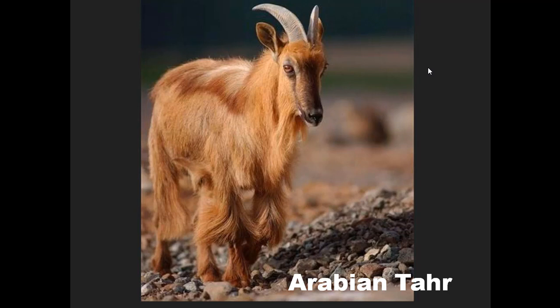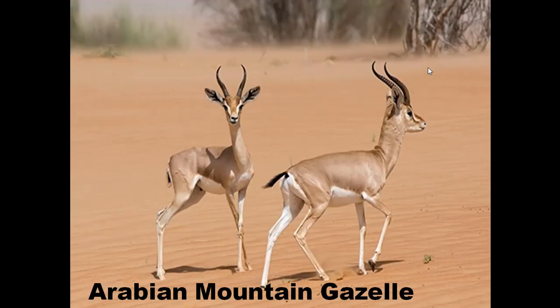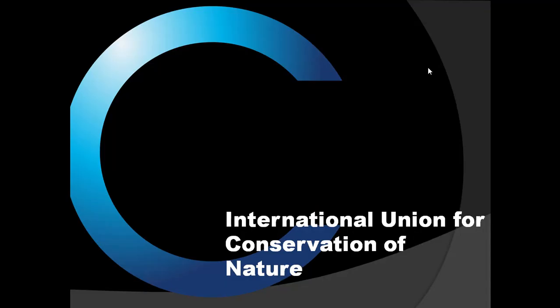The Egyptian vulture, Arabian Tahr — similar to the Nilgiri Tahr we have in Kerala — the Arabian Leopard, similar to our Indian leopard, and the Arabian Mountain Gazelle, somewhat like a deer, are some of the animals facing extinction. These are animals found in the mountains and are on the endangered list by the IUCN — the International Union for Conservation of Nature — due to hunting or loss of habitat.